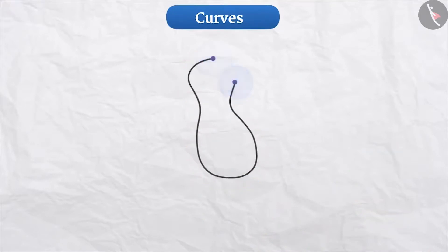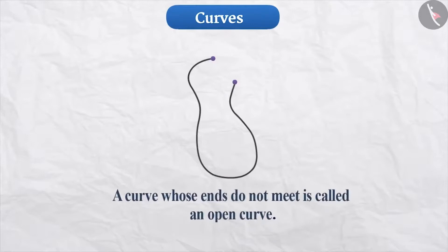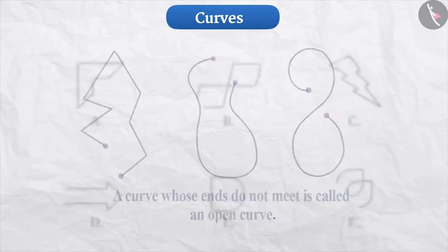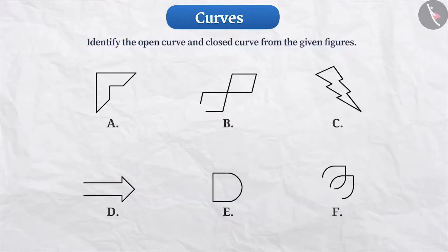If we look at this curve, we will find that it starts at one point and ends at another point, meaning the ends of this curve are not joined. Such curves whose ends are not joined are called open curves. The start and end points of such curves are different. Can you identify open curves and closed curves from the given figures? Try it.